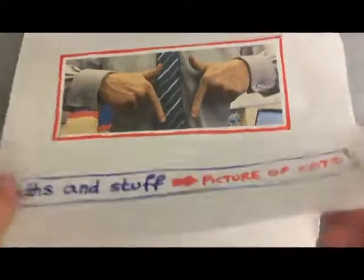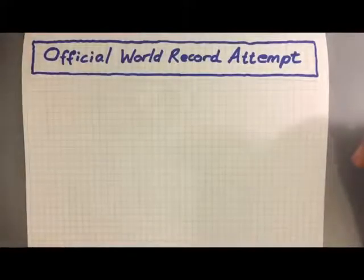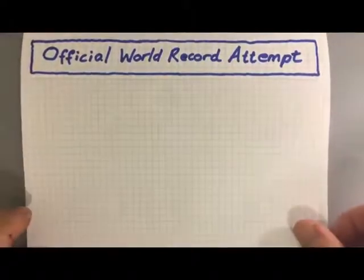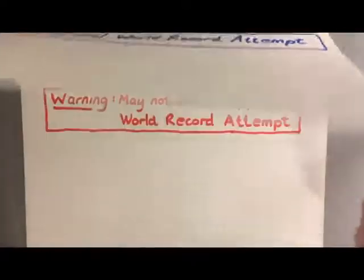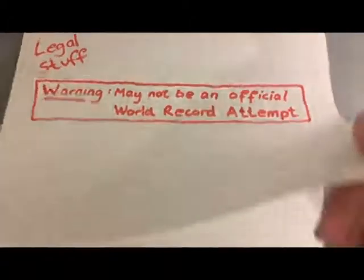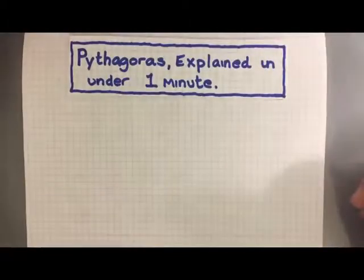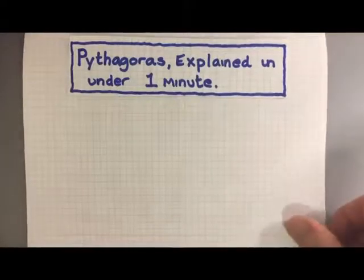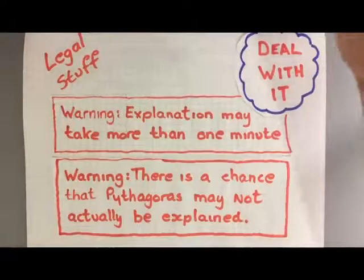Okay, what are we going to do today? Well today we're going to hopefully set an official world record. Now there's going to be some legal stuff attached to that, so I've got to show you a few legal notices. The world record we're going to try and break is we are going to try and explain Pythagoras in under one minute. Again, a couple of legal notices.